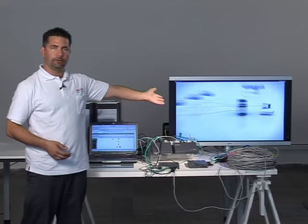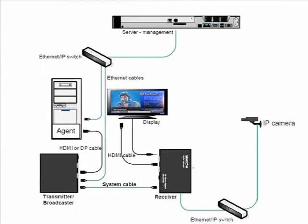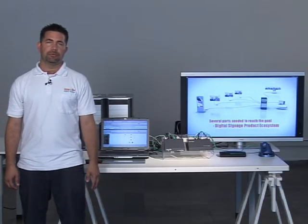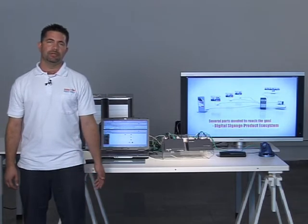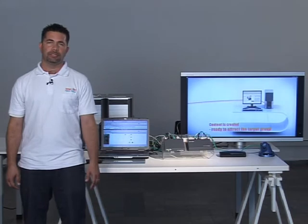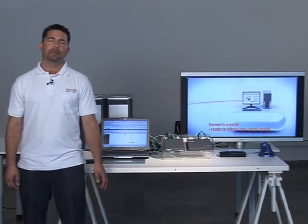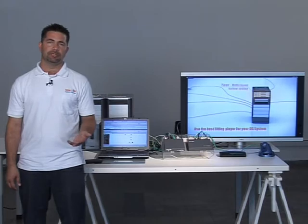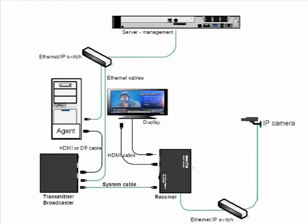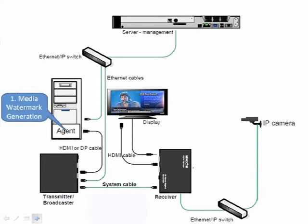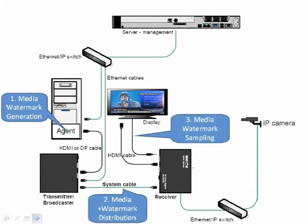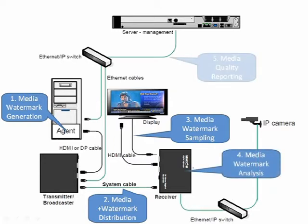We will now focus on the management features. The first feature is the performance monitoring capability that enables proof of performance. In current players, reports can be sent to customers indicating how many times media was sent to the displays, but we don't really know if the media was actually displayed on the screen. The DS Vision Digital embeds a watermark on the media on the player side, and then monitors the media presented by the display. This mechanism completes the proof-of-play capability of the players.